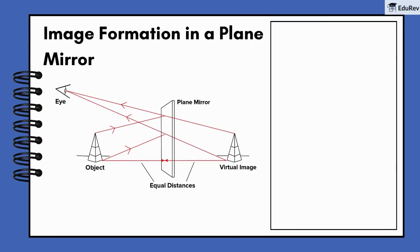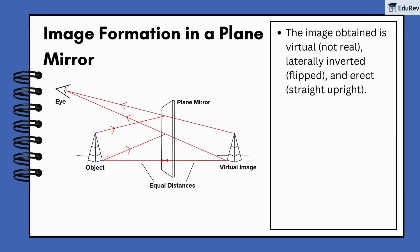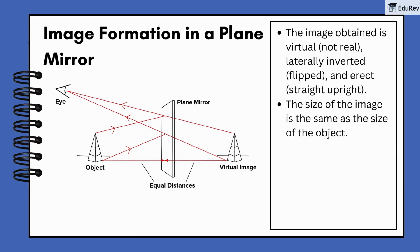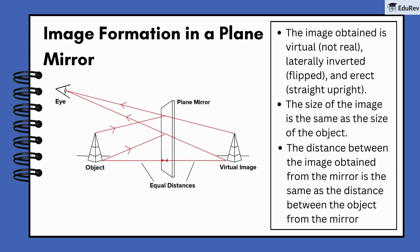Talking about mirrors, have you ever wondered how mirrors work? When you stand in front of a mirror, you see an image that is virtual, laterally inverted, and erect. That means the image is not real and is flipped, but still stands upright. The size of the image is the same as you, and the distance between you and the mirror equals the distance between your image and the mirror.